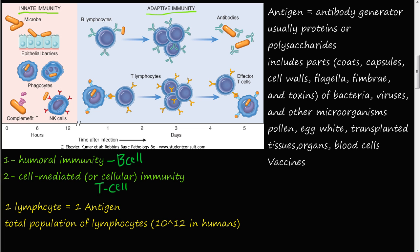Natural killer cells, phagocytes, complement, and epithelial barriers are constantly the first defense against all microbes and bugs that get inside our body and make us sick. From zero to about 14 to 16 hours, the innate immunity is the main defender against these microbes or bugs that cause us problems.